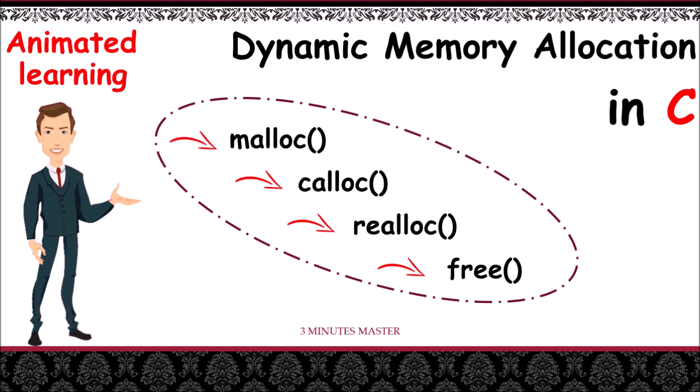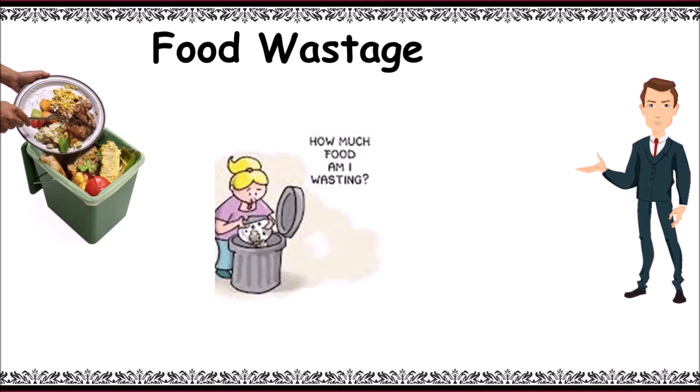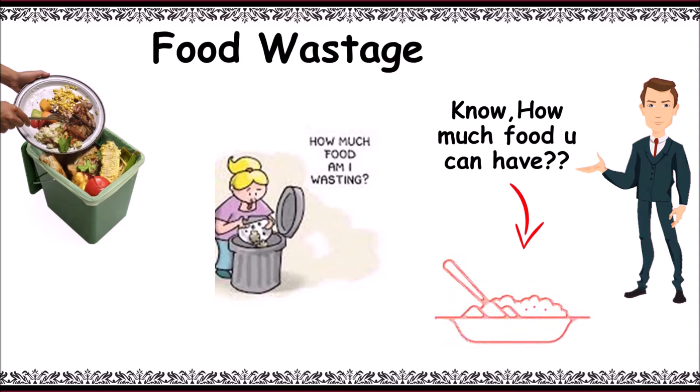Welcome to 3mm. Let's learn about dynamic memory allocation. Let's start with a general example regarding food wastage. We often see this issue and get worried about how much food we waste. For this, you must know first how much food you can have and serve it accordingly so that food doesn't get wasted.